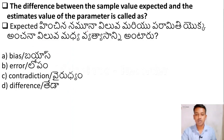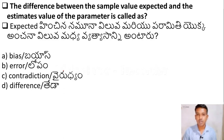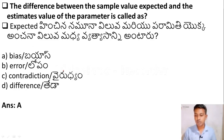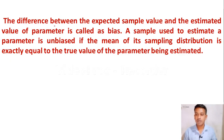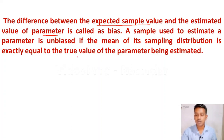The questions are also available in Telugu — you can pause the video and read them. Friends, when there is a difference between sample and population, it is reported. Population means the whole population; sample means we are taking only some representatives. The difference between the expected sample value and the estimated value of the parameter is called Bias — Option A is the right answer. A sample used to estimate a parameter is unbiased if the mean of its sampling distribution is exactly equal to the true value of the parameter.